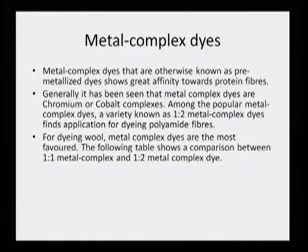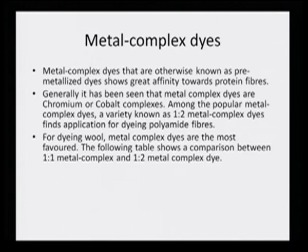Among popular metal complex dyes, the 1:2 metal complex dye class finds application for dyeing wool and metal complex dyes are most favored for it. There are two classes: 1:1 metal complex dye and 1:2 metal complex dye. The following table shows the comparison between them. For wool this is an ideal metal complex dye and is very good; for cotton it has also been found to be good, and for polyamide fibers as well. Let us see a comparative analysis of their performance according to reactivity.